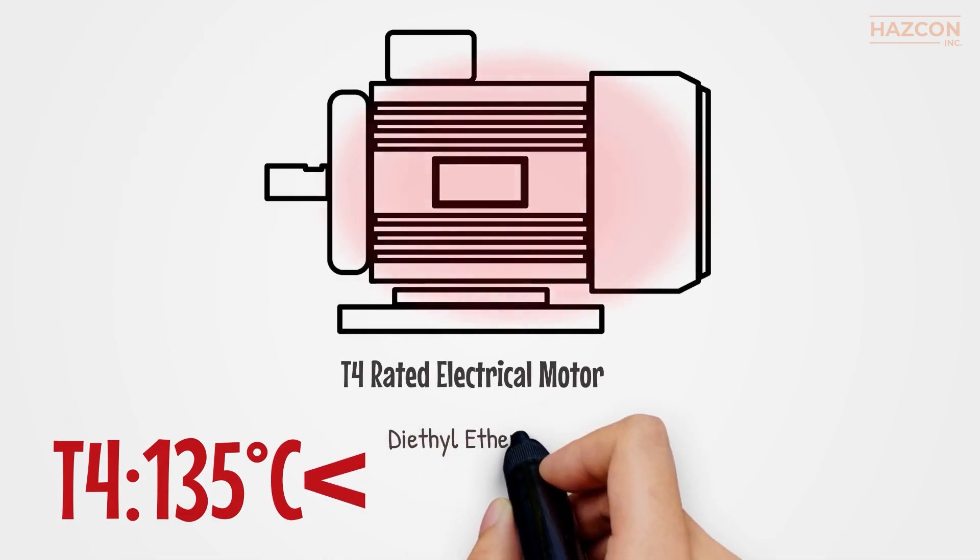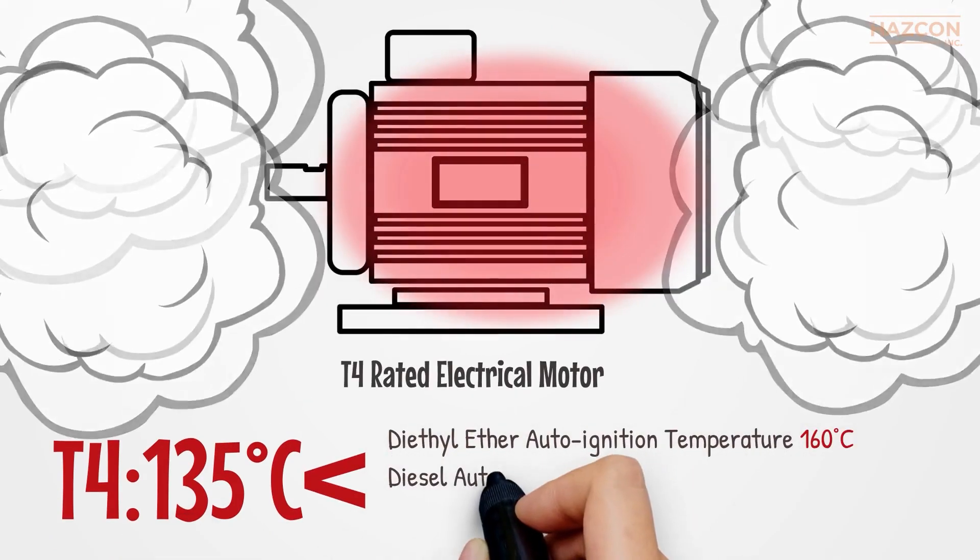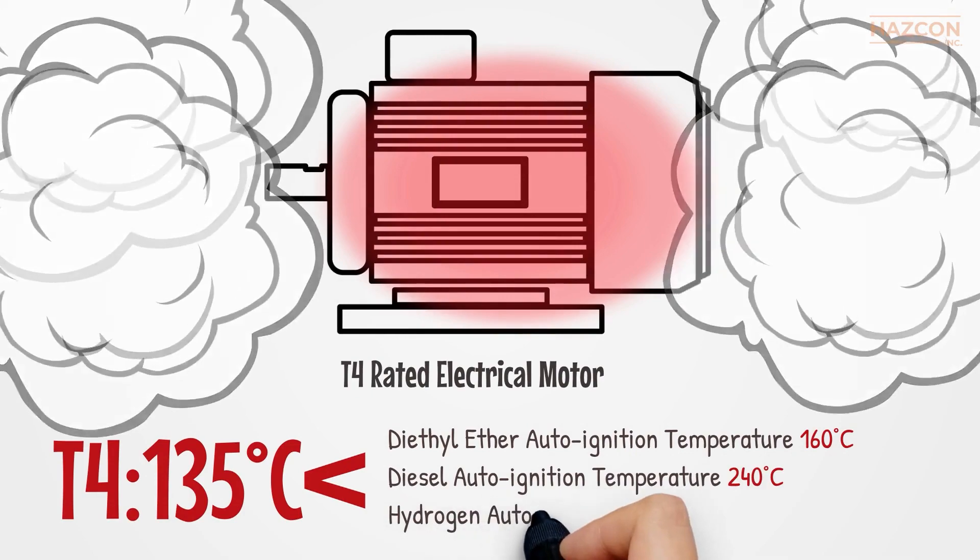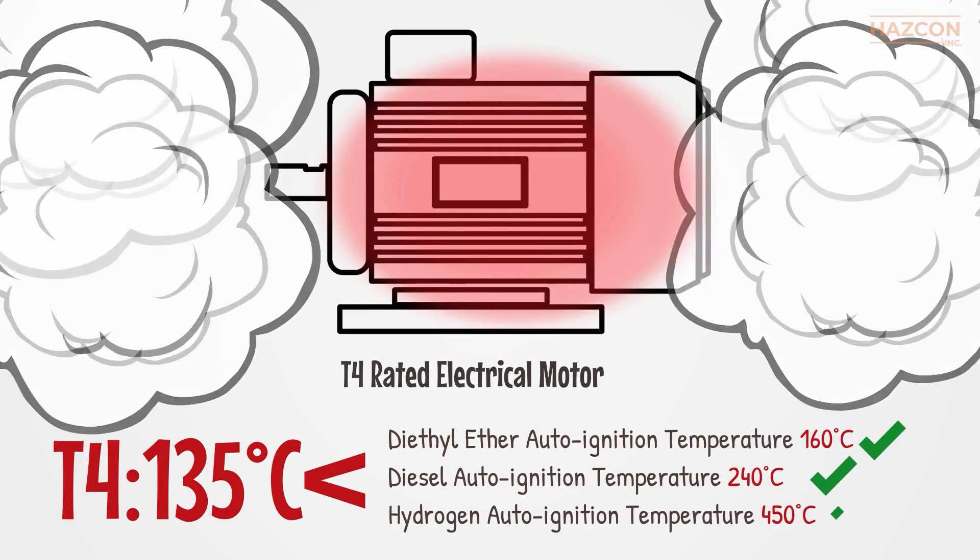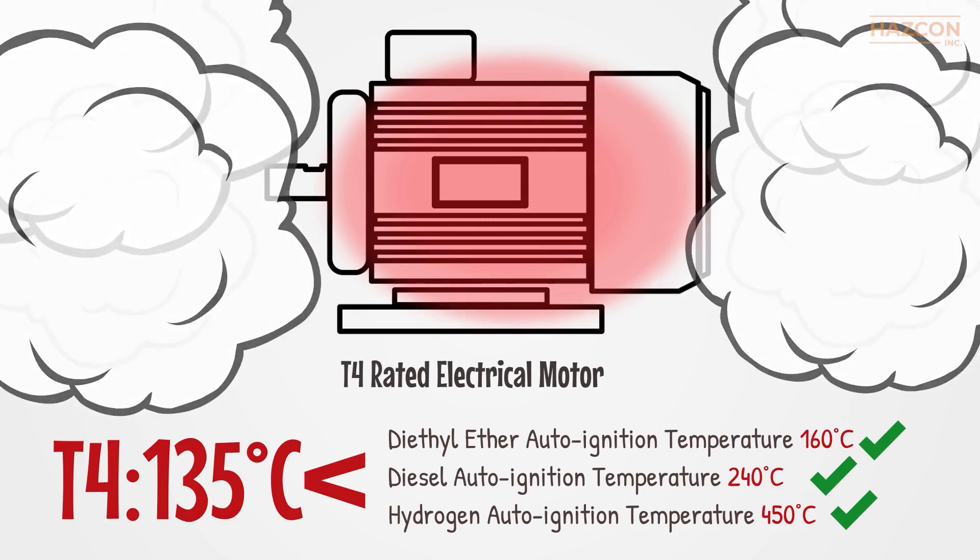Now this T4 rated electrical motor can be safely installed in an area when diethyl ether, diesel or hydrogen are present because the minimum ignition temperature of these gases is higher than maximum surface temperature rise of our T4 motor.